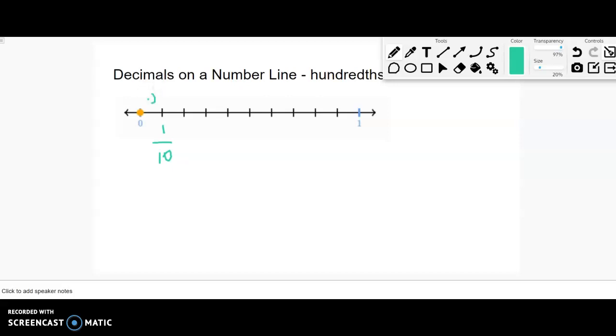So I can think of this as one tenth as a fraction, or I can think of it as 0.1 as a decimal. So I have two tenths, or 0.2, and I could continue: three tenths, four tenths, five tenths, six tenths. Let's label seven tenths, eight tenths, nine tenths.